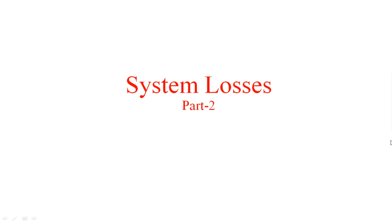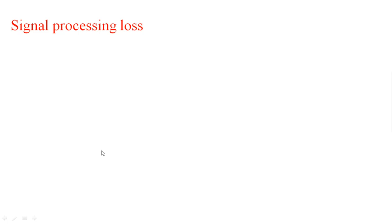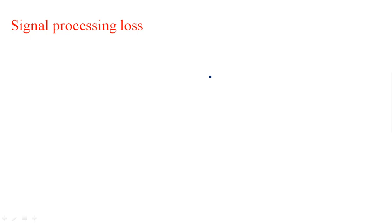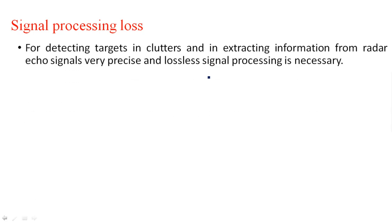Signal processing loss: what do you mean by signal processing loss? When the signal is being processed in the entire microwave transmission line, the signal may be degraded because of the number of components involved in the transmission line. For detecting the targets in clutter and extracting the information from radar echo signals, very precise and lossless signal processing is necessary. This is why we study this point — it concerns the received echo signal strength.